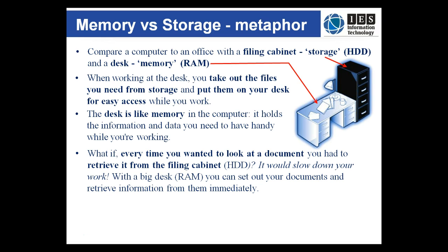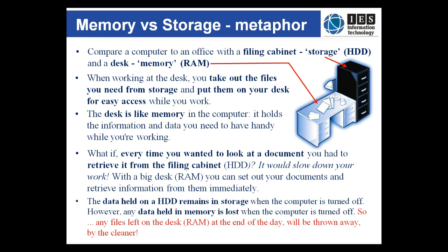So imagine if every time you wanted to look at something you had to get it from the filing cabinet — it would slow you down even if the filing cabinet was right next to the desk. You can also imagine that a bigger desk can hold more documents so you can do more things or even larger jobs. The same is true if a computer has more RAM. Finally, you can lock a filing cabinet at the end of the day, so everything remains in there — just as data stored on a hard disk drive or solid state drive remains in storage when the power is turned off. But the data held in memory is lost when the computer is turned off — like a cleaner coming in at the end of every day and throwing everything away left on the desk. Disaster.